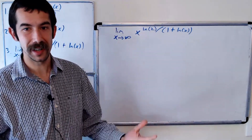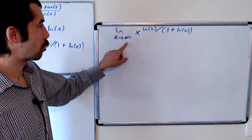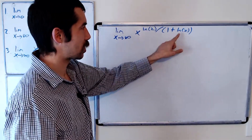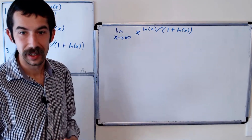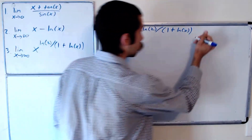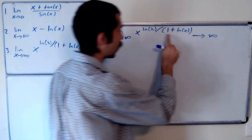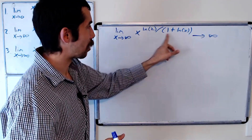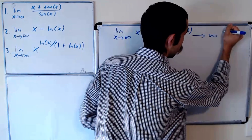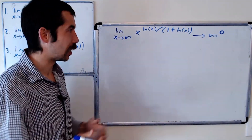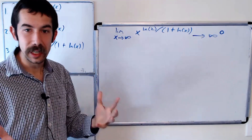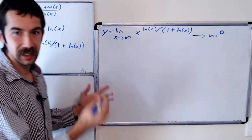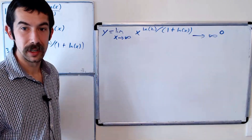We're on to the last one, which is the hardest. It's the limit as x goes to infinity of x raised to the natural log of 2 over 1 plus natural log of x. If we tried to just plug in x equals infinity, we'd get infinity raised to something over infinity, which is zero — so this is another indeterminate form. Here we have this exponent, so the way we deal with that is we set this limit equal to y, take the natural log of both sides, and find the limit of the natural log.